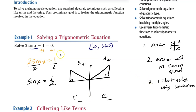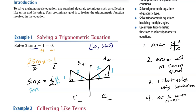So sine is SOH — opposite over hypotenuse. The angle is always on the inside. Opposite is 1, hypotenuse is 2 for both triangles. We're going to use our knowledge of 30-60-90 and 45-45-90 triangles to find the angle based on the sides.